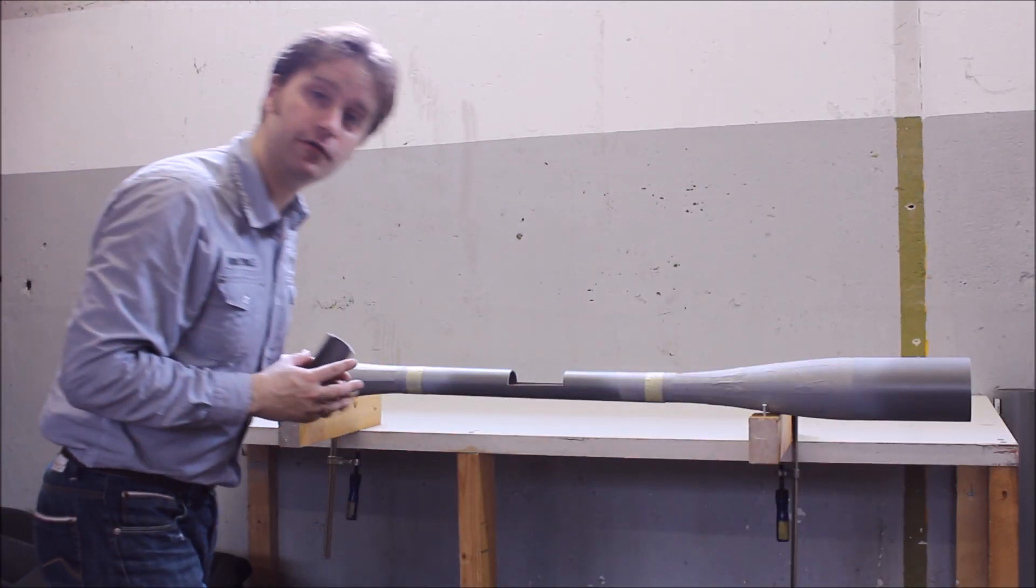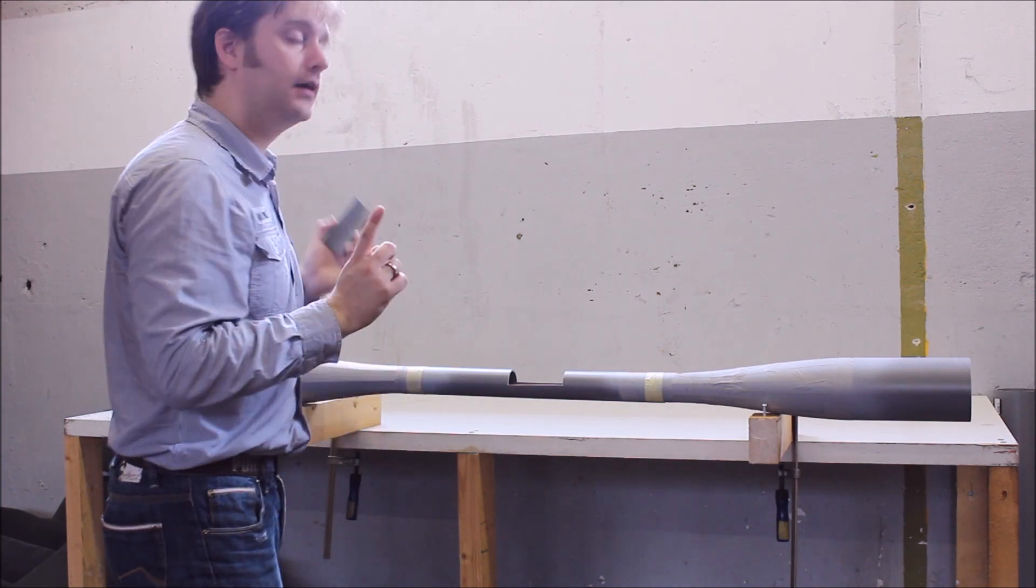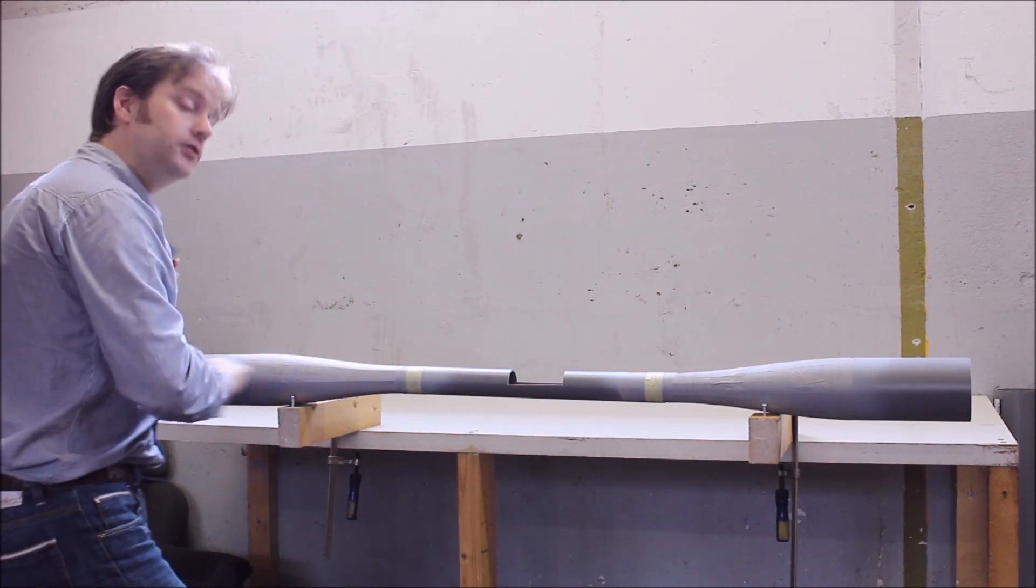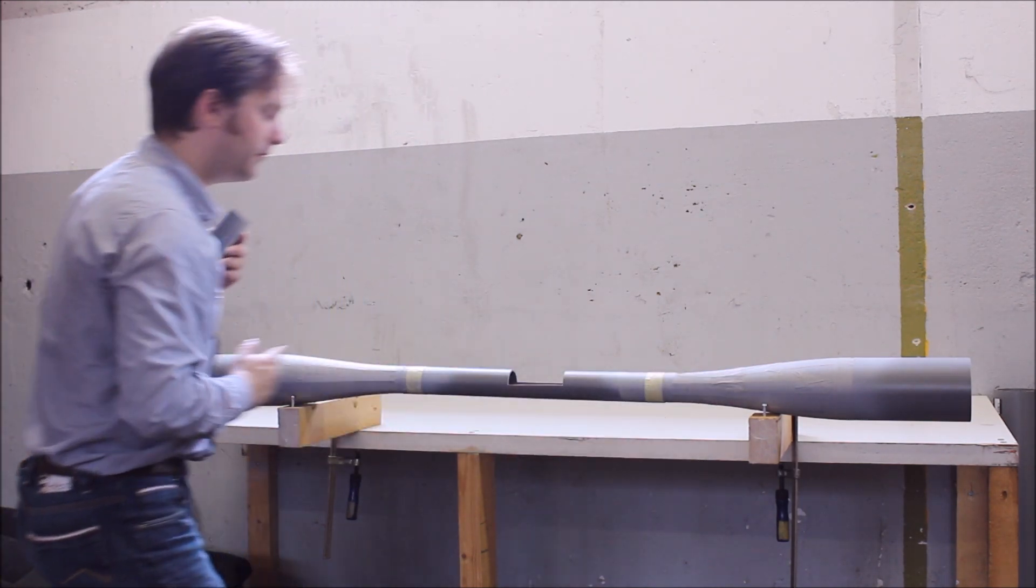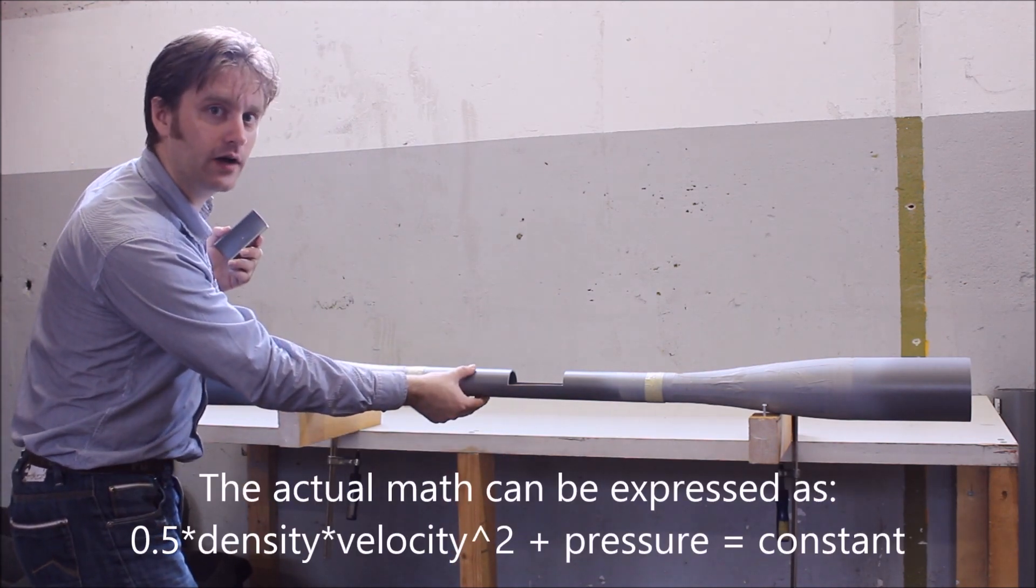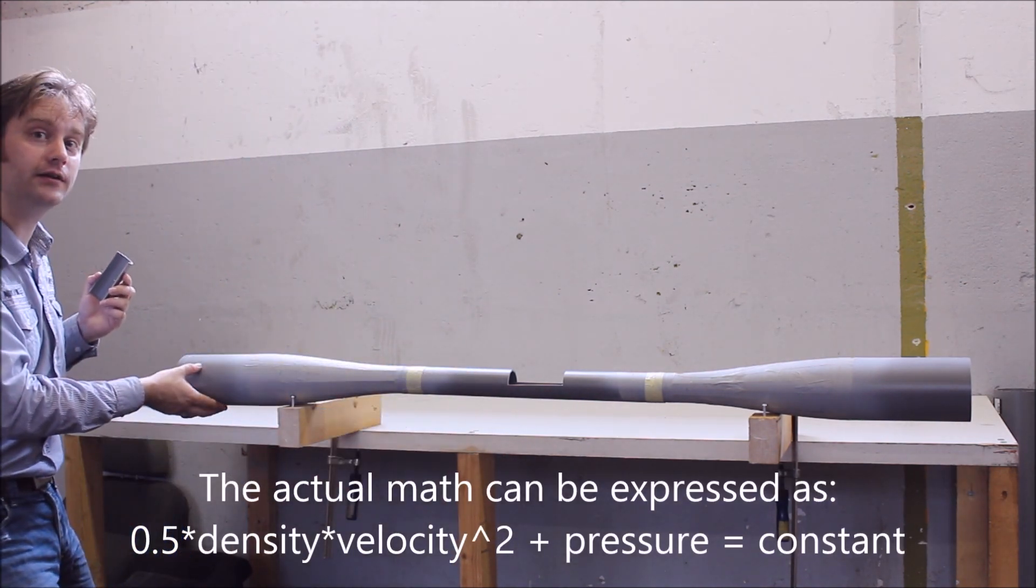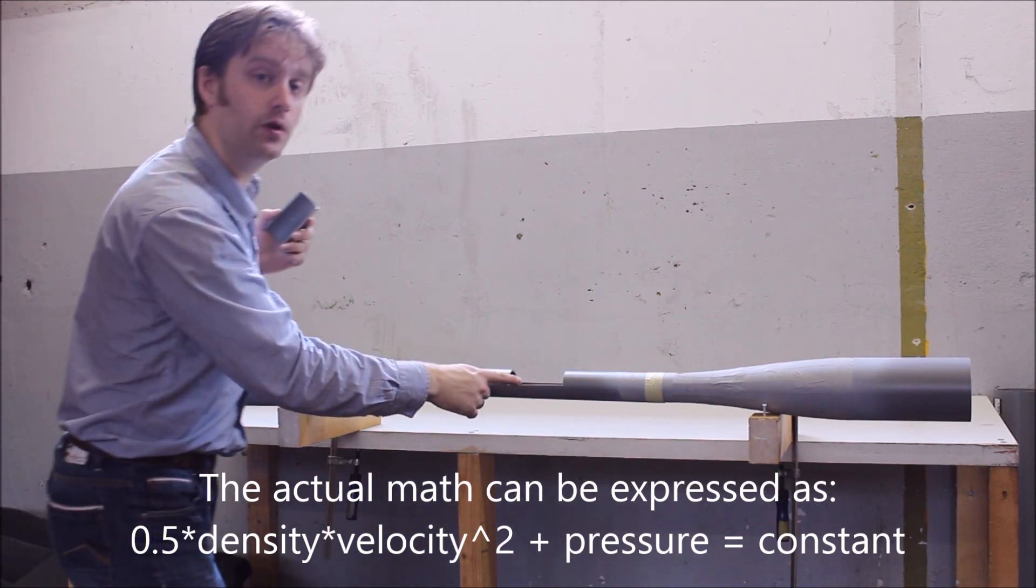What does Bernoulli's Principle say? It says that on a constant streamline, whenever the velocity is higher, which it will be in the small diameter sections compared to the large diameter sections, the pressure will be lower.